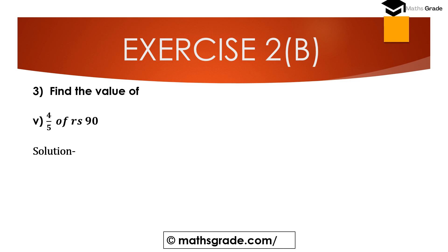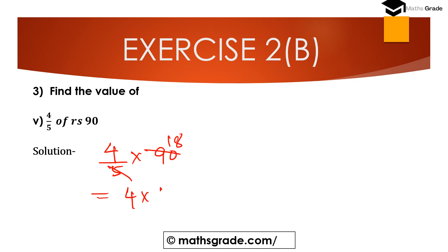Question number 5th part: 4 divided by 5 of 90 rupees. So 4/5 multiplied by 90 — 5 multiplied by 18 is 90, so we get 4 multiplied by 18, which is 72 rupees. The answer is 72 rupees.